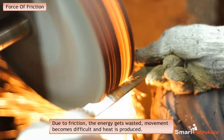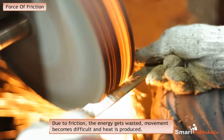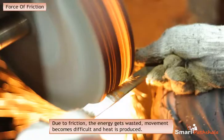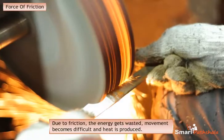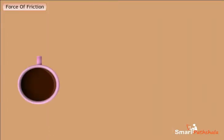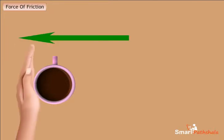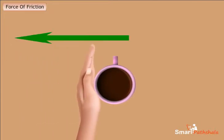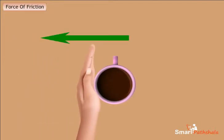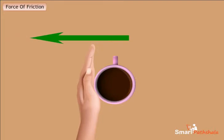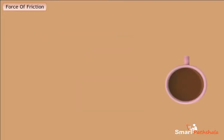Now let us perform a small activity to understand the direction of friction. Take a cup and place it on the left side of the table, then gently push it towards the right side. You will observe that it stops after moving a certain distance.